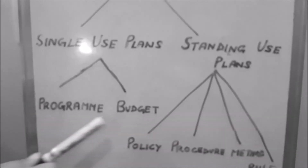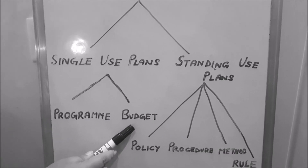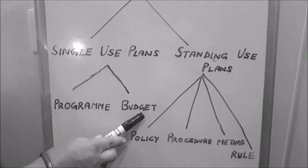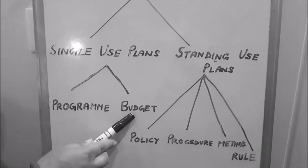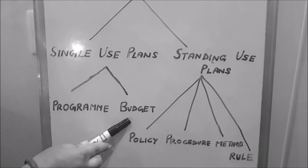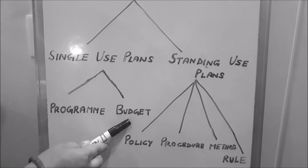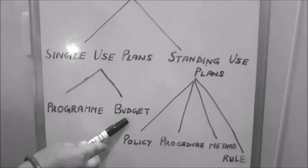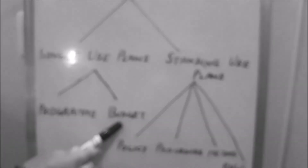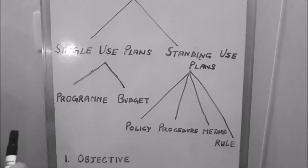The last plan is budget. Budget is the specific statement of expected results, expressed in numerical terms for a definite period of time. For example, sales budget, production budget, and cash budget are all examples of budget. Budget is a very important tool for planning as well as controlling, but since it involves forecasting about the future, it is included under planning.